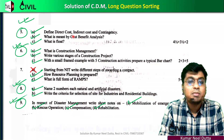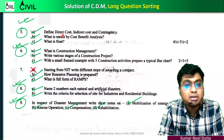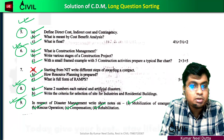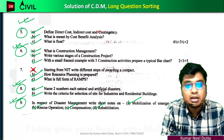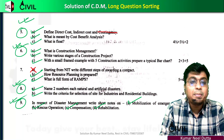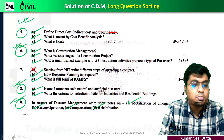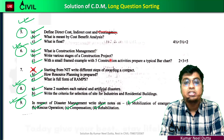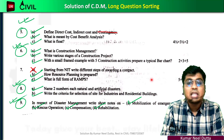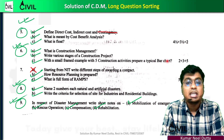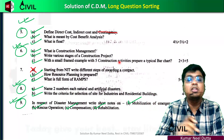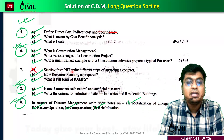Then you can get the next year's question about cost management. The cost management is a contingency. What is contingency? You can get the float. You can get the various stages of your construction project. Then you can get the bar chart, link bar chart, past activity, and notice inviting tender.